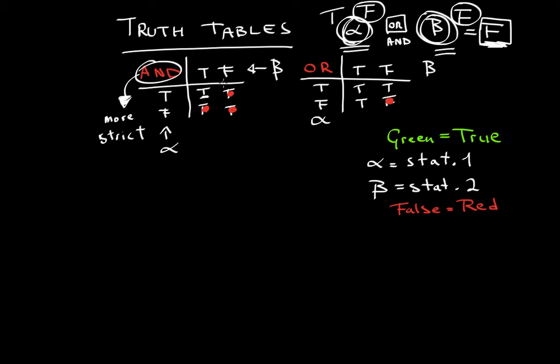And let me take green now. In the AND truth table, it's green at one spot. However, it's green at three spots in the OR truth table.